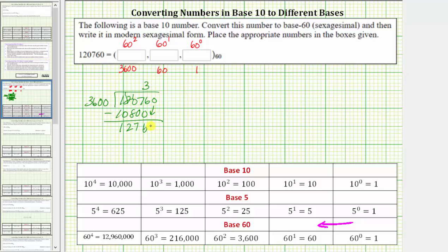Bring down the last digit of zero, and now determine how many 3,600s are in 12,760, which I believe is also three. We already know three times 3,600 is 10,800. If this difference is less than 3,600, this three is correct. So now we subtract.